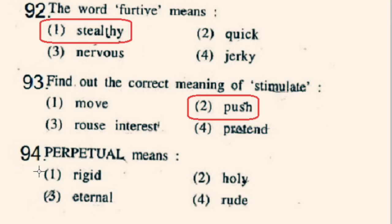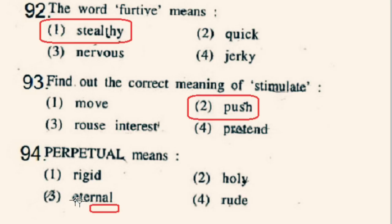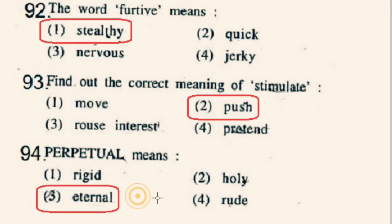Question number 94: Perpetual means what? The word perpetual means anant, anwarat, chirasthayee, or sarvakalik. So the correct meaning of perpetual will be 3rd option: eternal.